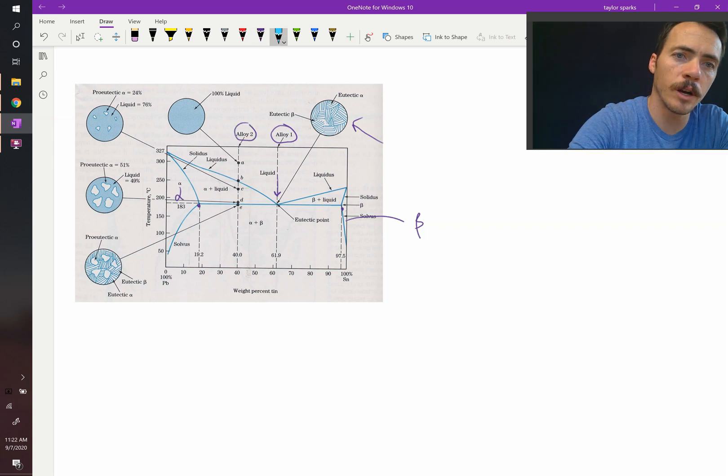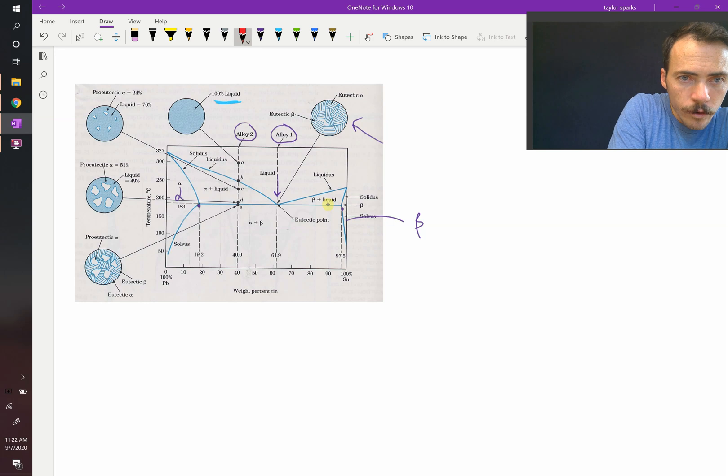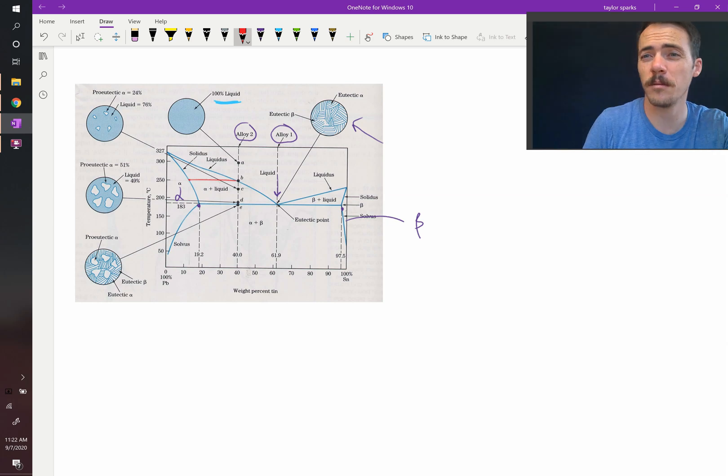Up here you've got pure liquid, right? And then when you reach point B on this graph, you form your very first solid. And the solid that forms, we could draw a little line over, the solid that forms over here is going to have, looks like maybe 15 weight percent tin in the solution.